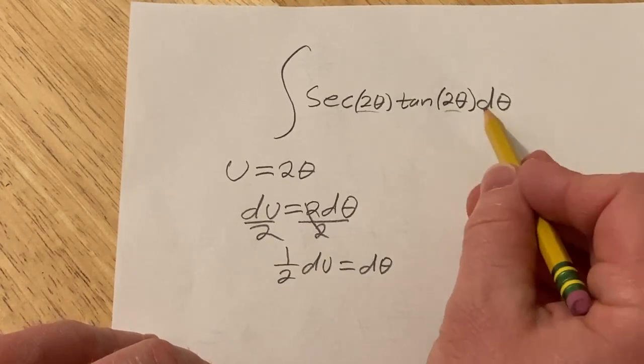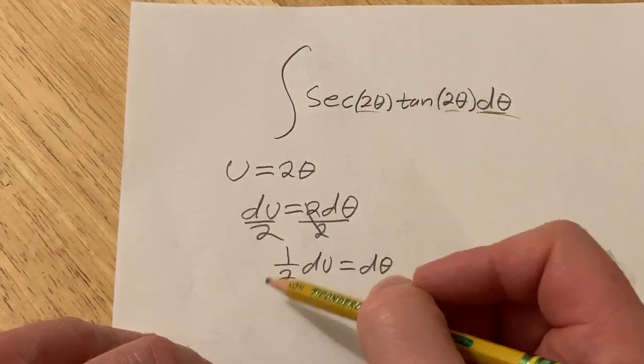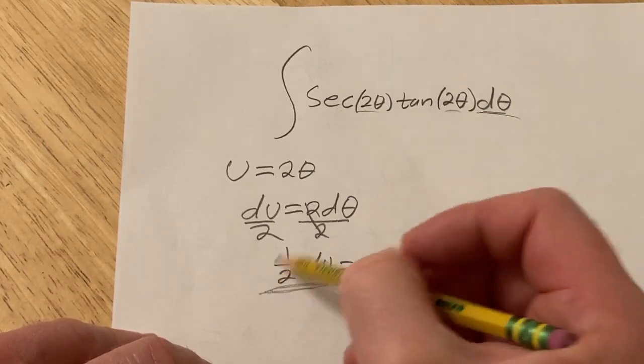All right, so now we're in a good place. Now we can just make the substitution. So the d theta is 1 half du. I'm going to pull out that 1 half.